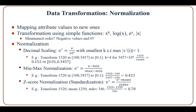The first method is decimal scaling, in which attribute values are divided by 10 to the power k, with the smallest k such that the maximum of the absolute value of the attribute values is less than 1. Another method is min-max normalization, in which the mean is subtracted from the attribute values and then divided by the difference between the max and the min.